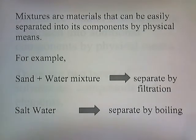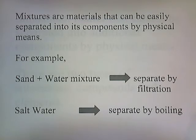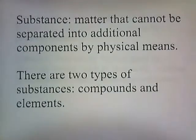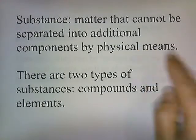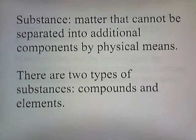But there are some types of matter that cannot be separated into additional components by physical means, and these types of matter are called substances. Substances are matter that cannot be separated into additional components by physical means, and there are two types of substances: compounds and elements.